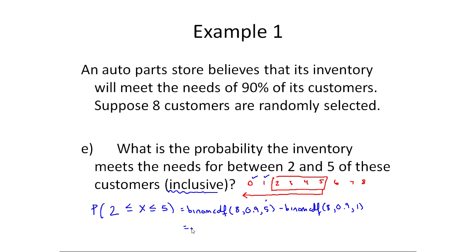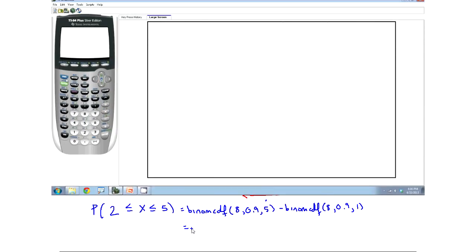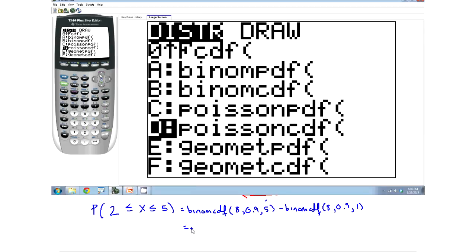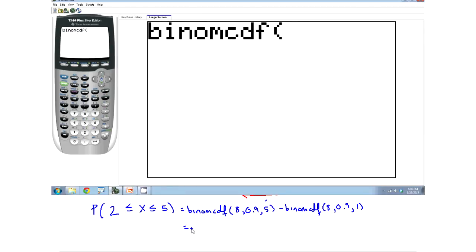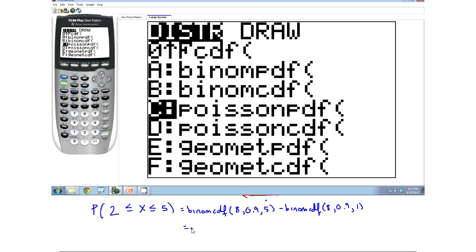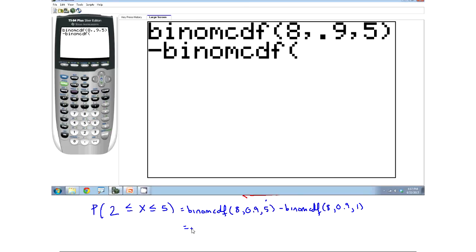Now, when you put this one in the calculator, you're going to have to go through and do the CDF twice. So make sure your screen's clear and so go to second and VARS. Find your CDF. Type in the eight, comma, the point nine, comma, the five. Make sure you close your parentheses, now subtract. Go back into the menu, right? Second, VARS. Find your binomial CDF. Eight, comma, point nine, comma, one. Now you can press enter, figure out what it equals. You should get point oh, three, eight, one.